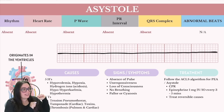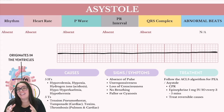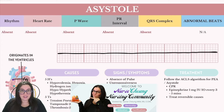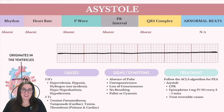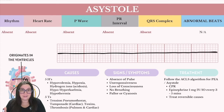When talking about causes, we look at the five H's and T's. The H's are: hypovolemia — low blood volume leading to inadequate cardiac output; hypoxia — insufficient oxygenation of the blood leading to cardiac failure; hydrogen ions, also known as acidosis — an acid-base imbalance disrupting cellular processes and cardiac function; hypo- or hyperkalemia — abnormal potassium levels affecting cardiac electrical activity and muscle function; and hypothermia — extremely low body temperature that slows metabolic processes and electrical conduction pathways in the heart.